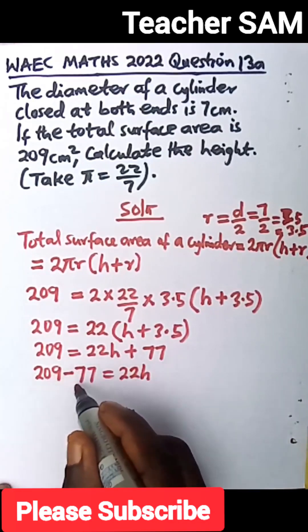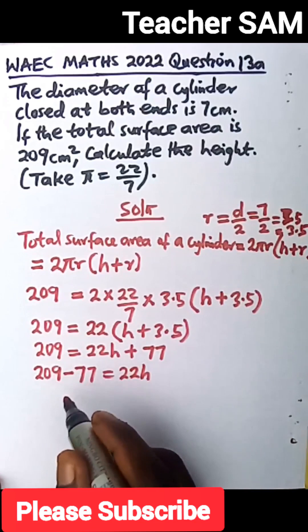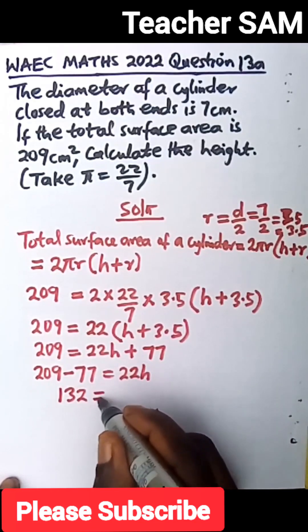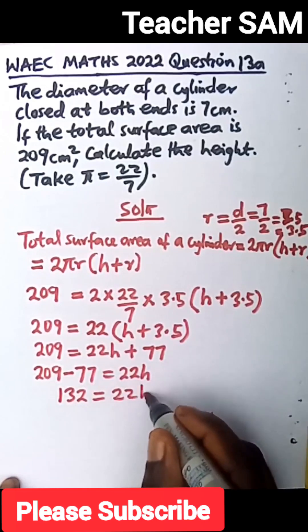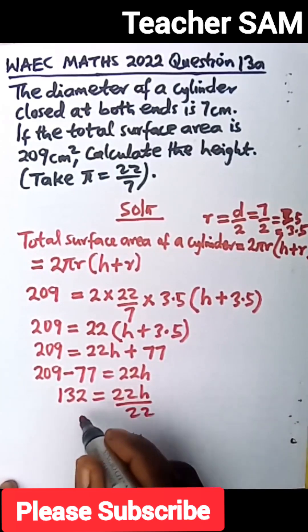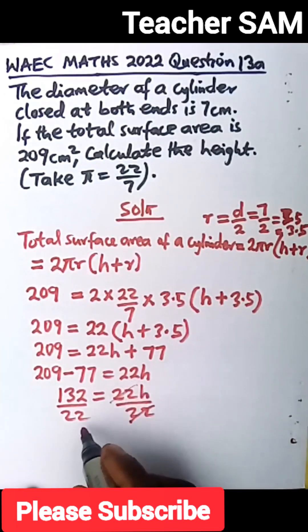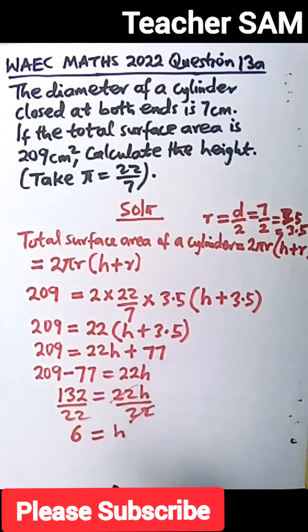Now we subtract 77 from 209. We have 132, which equals 22h. If we divide both sides by 22, we have 6 equals h. That is, 132 divided by 22 gives us 6. Therefore,